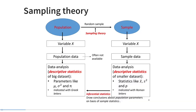I've previously explained the concept of sampling theory. We assume that there exists a population which constitutes all of the individuals that could have been part of our sample. All of these individuals have a particular trait, variable x, and we could compute descriptive statistics for variable x in the population.